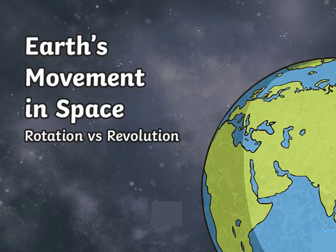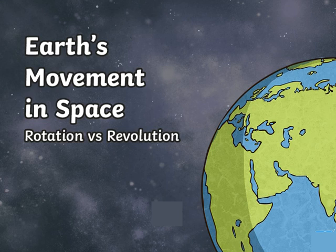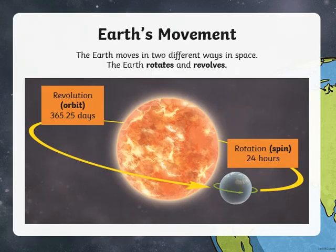Hello eighth grade, and welcome to this week's weekly breakdown. Last week we started talking about Earth's movement in space. We said Earth moves in two different ways: either by revolution or rotation. Revolution takes longer since it orbits the sun, so it takes one year. As for rotation, which is the spin, it only takes one day.